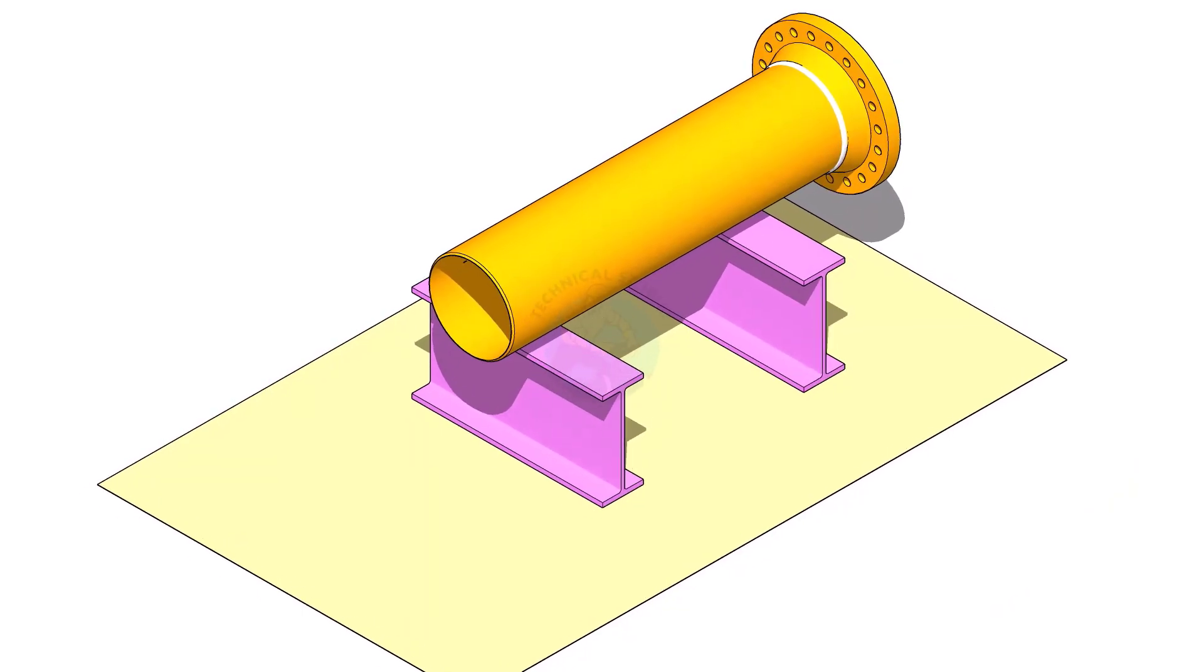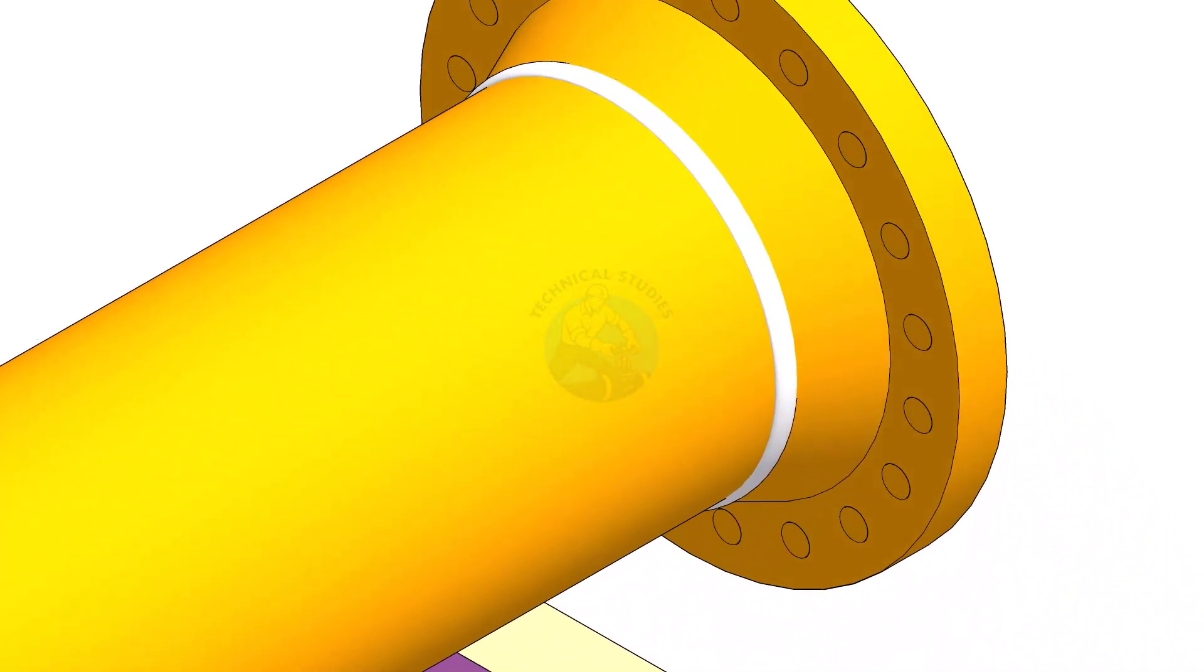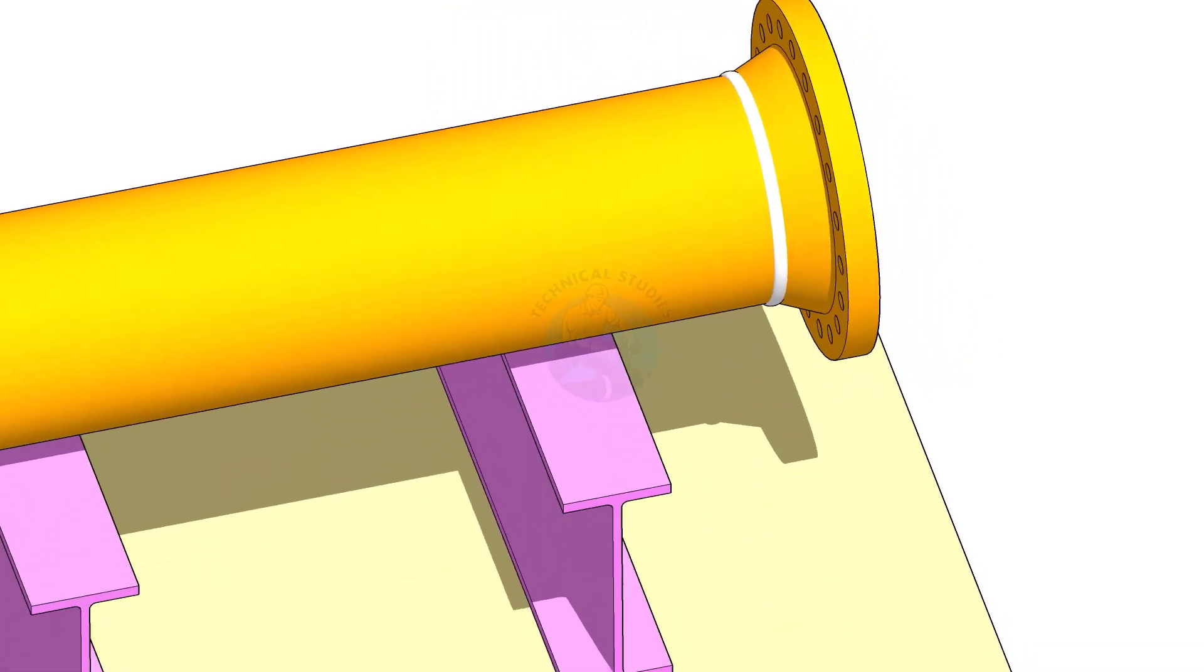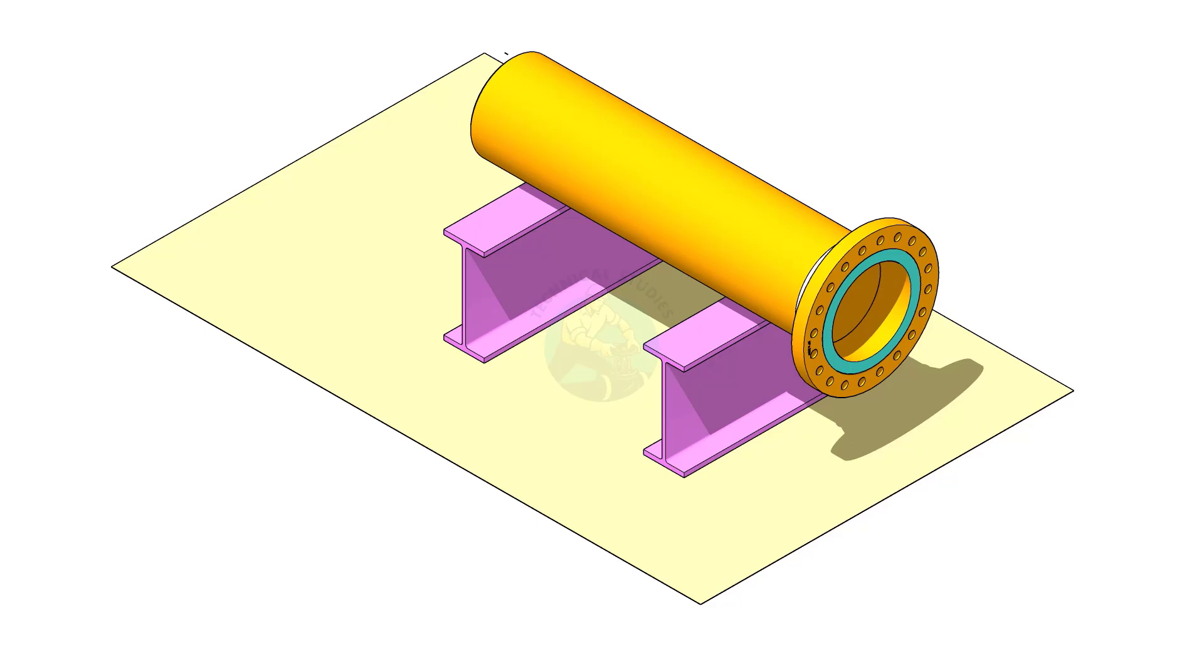Assume that the flange is welded to the pipe. Put the spool on suitable supports. Correct the plumbness of the flange.